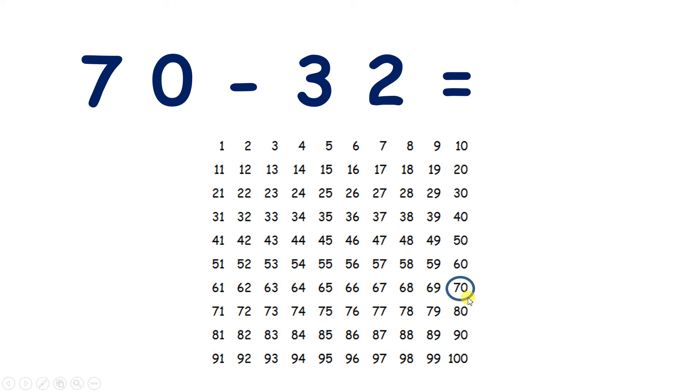So we start on 70, so we need to subtract three tens, so let's move up one, two, three places. And now we can subtract two units, so let's move one, two places to the left. And that gives us our answer, 38.